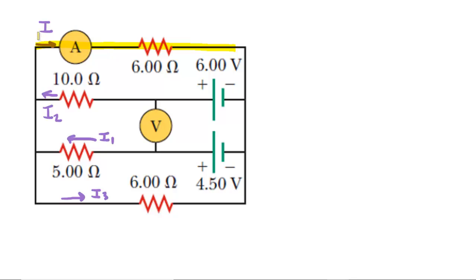For now, we're basically going to guess that current I is traveling to the right. Through another segment of the circuit, we have labeled another current called I2, traveling to the left. In another segment, we have labeled the current I1, also traveling to the left. And then in the lower segment of the circuit, we have I3 traveling to the right. You want to label currents in all segments of your circuit.